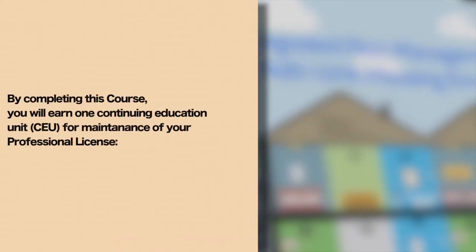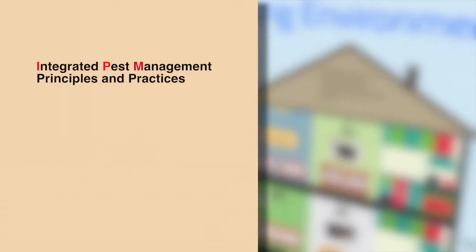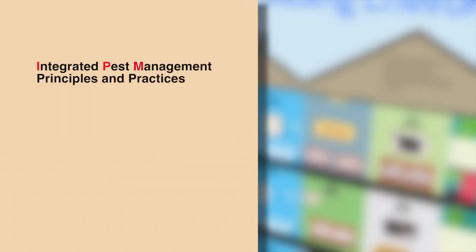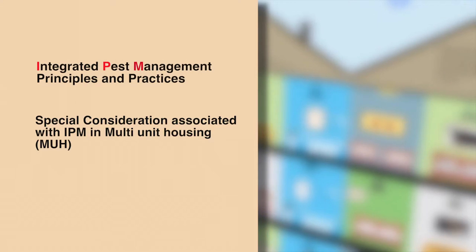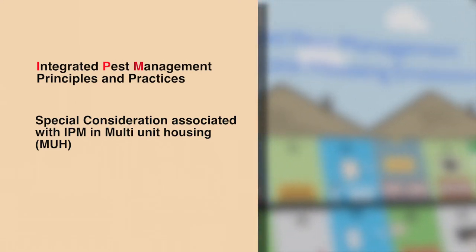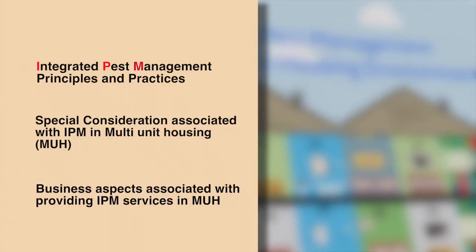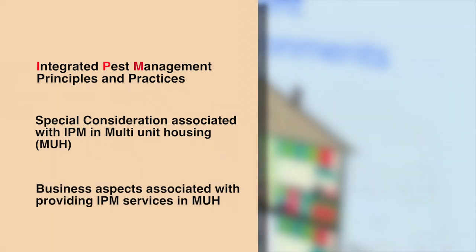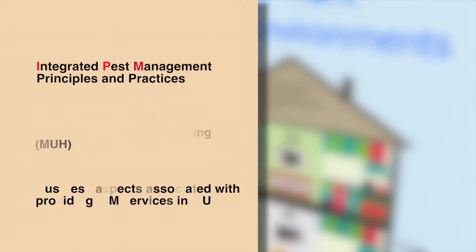By completing this course you will earn one continuing education unit for maintenance of your professional license. By the end of this course you will have a better understanding of integrated pest management principles and practices, special considerations associated with IPM and multi-unit housing, and business aspects associated with providing IPM services in multi-unit housing. But first, let's get an understanding of what IPM really means.